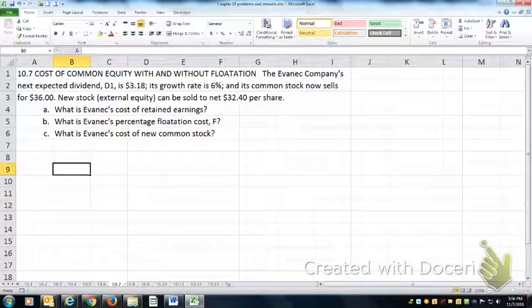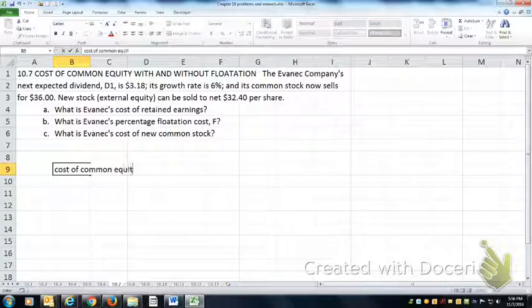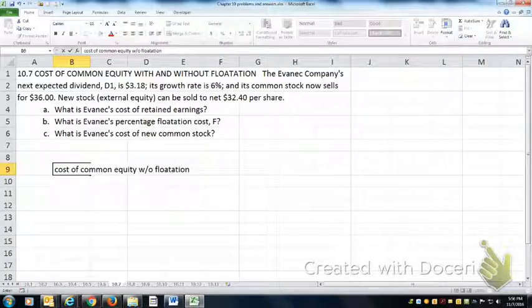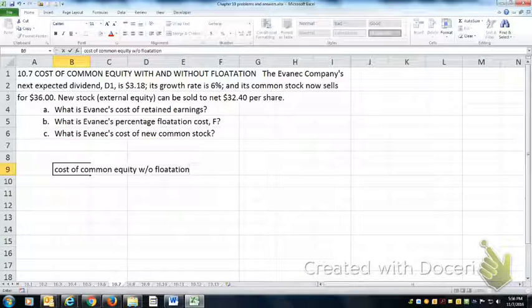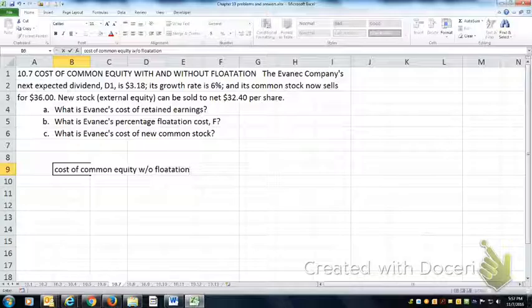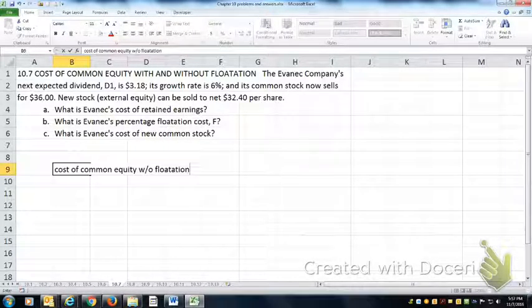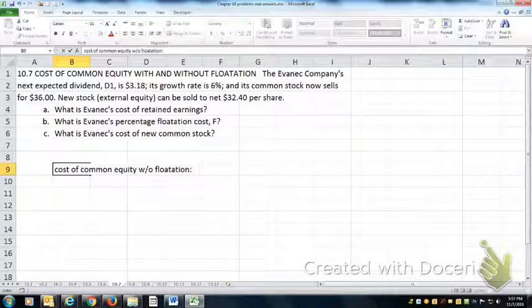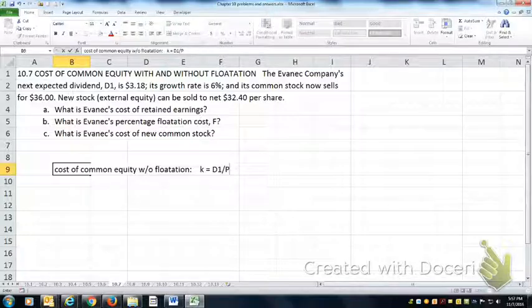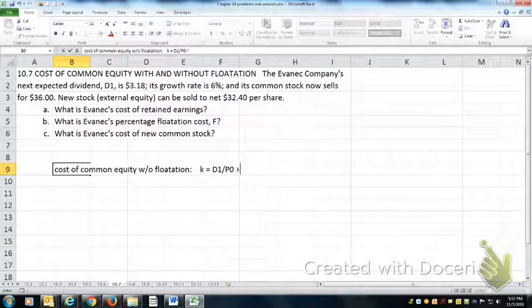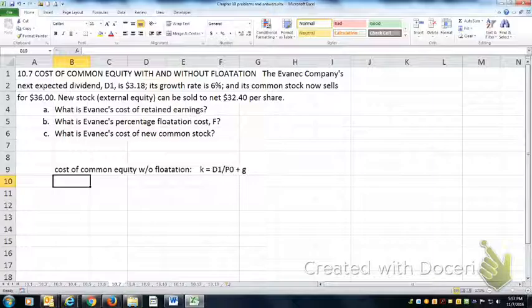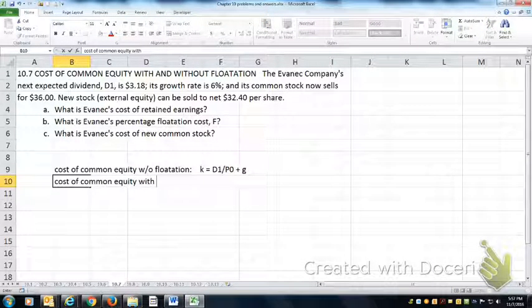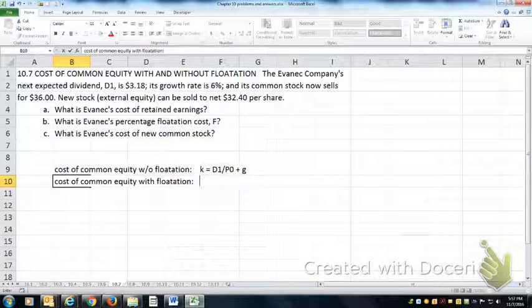The cost of common equity without flotation costs. What we see here, we have a D1, we have a growth rate, and we have a P0. So we'd be using the discounted cash flow approach: K is equal to D1 over P0 plus G.